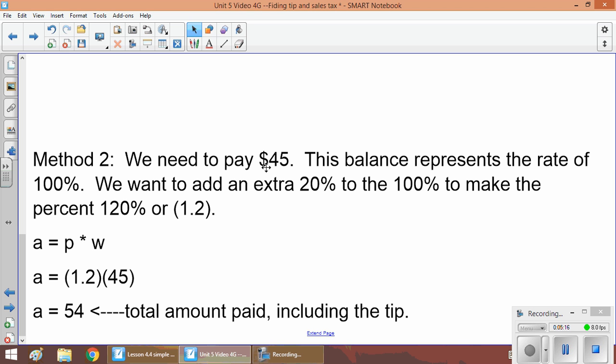You also want to pay your waiter or waitress 20%. So you'd not only pay your 100%, which is 45, but you want to add 20% to it. So essentially, you're paying 120% or a rate of 1.2.